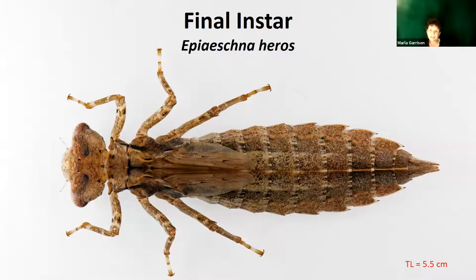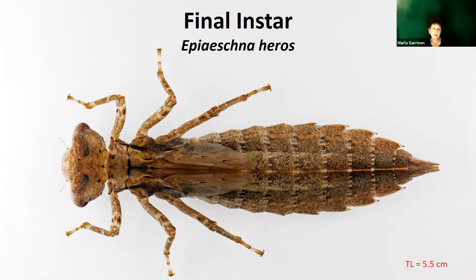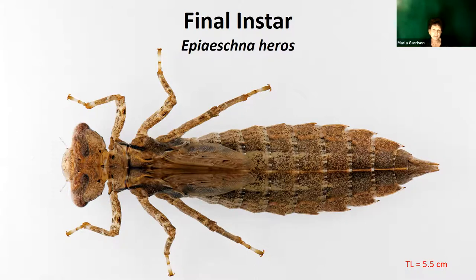Here's that same species 12 or 13 molts later as a final instar — dramatic differences not just in patterning and coloration, but in size. Now we're talking about a 55-millimeter-long final instar nymph with wing pads extending roughly back to the hind knee joint. This one is getting ready to emerge into an adult dragonfly.